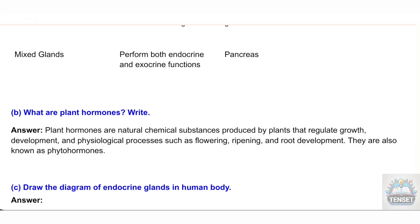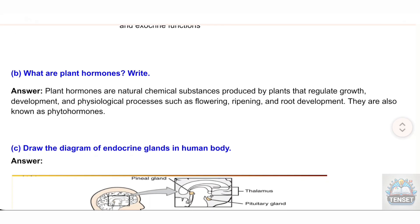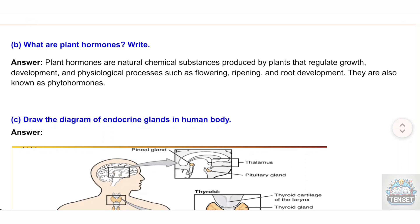B) What are plant hormones? Answer: Plant hormones are natural chemical substances produced by plants that regulate growth, development, and physiological processes such as flowering, ripening, and root development. They are also known as phytohormones.